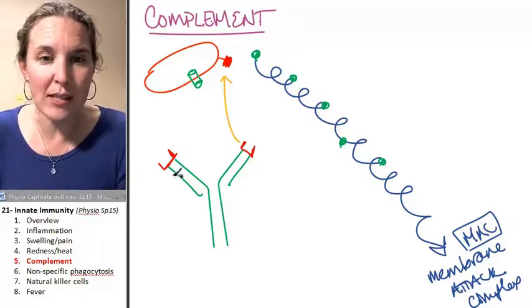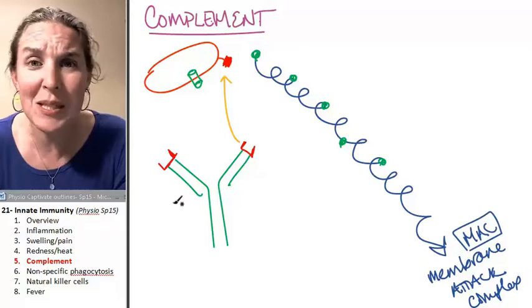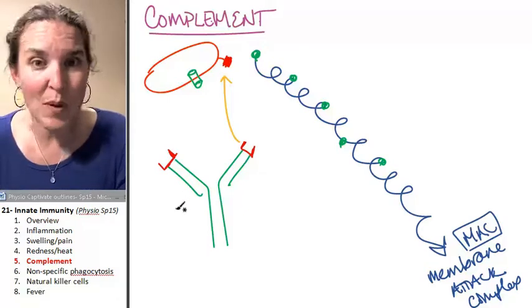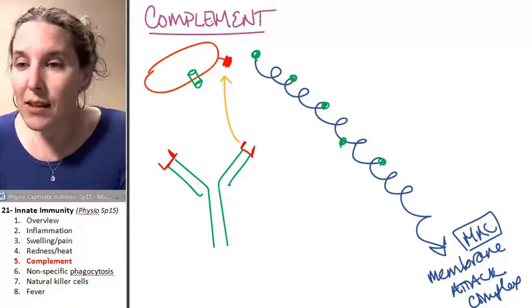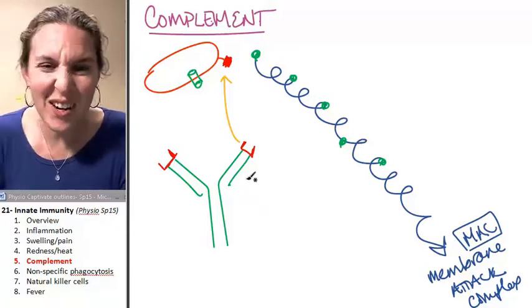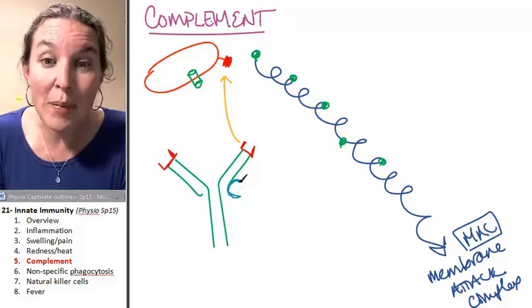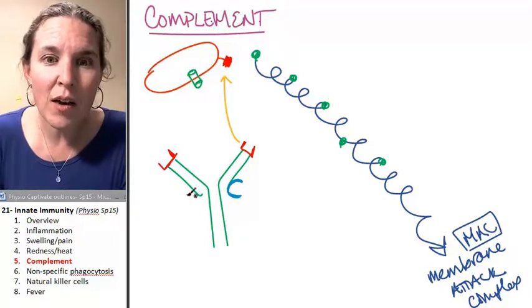Now remember, this little end piece is super specific. It's not going to match with just anybody, but if the antibody matches, then there's a little place, it's crazy, in the armpit of the antibody.